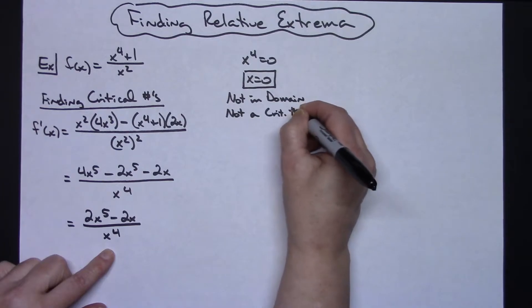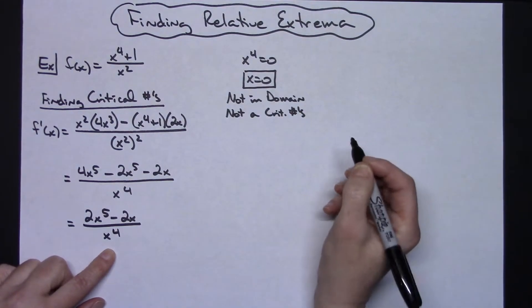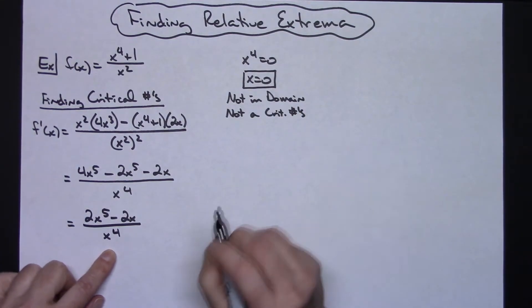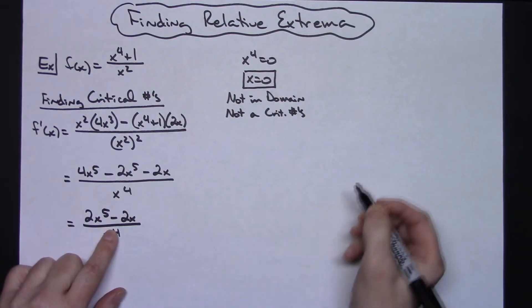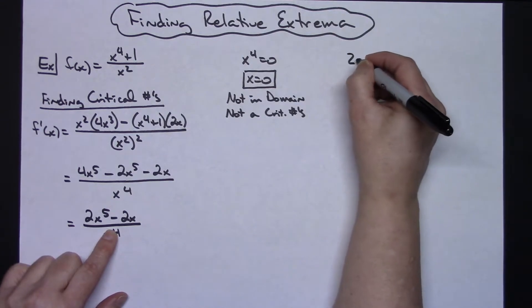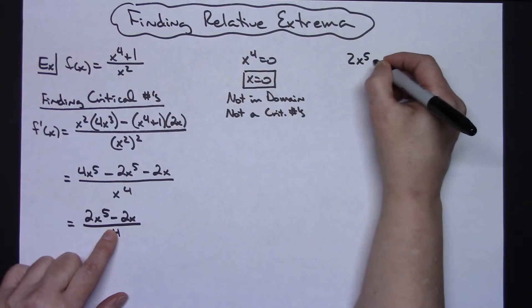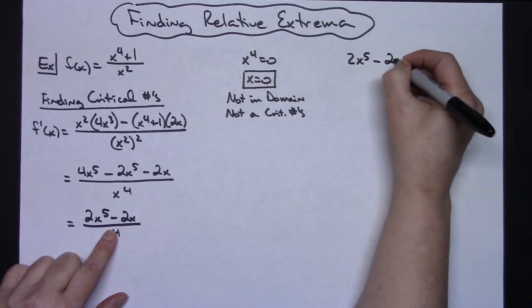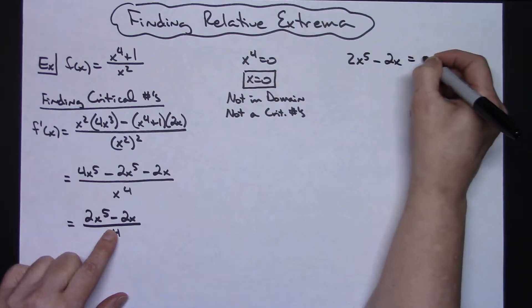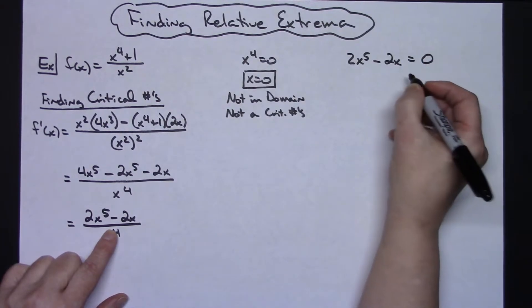So let's put 'not in domain' — therefore it's not a critical number. However, we're going to address it here in a little bit and show you why it's still important. Now we're going to take that numerator and set that equal to zero: 2x to the fifth minus 2x equals zero.